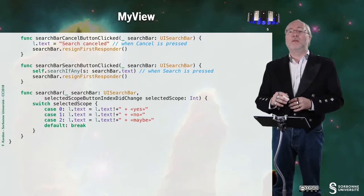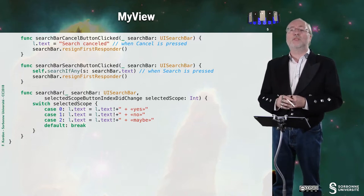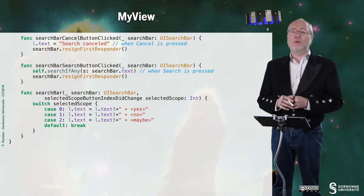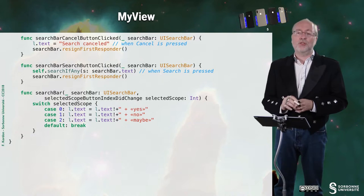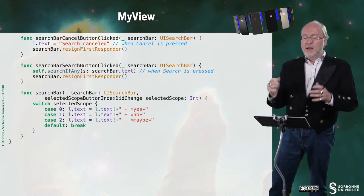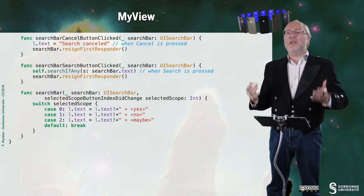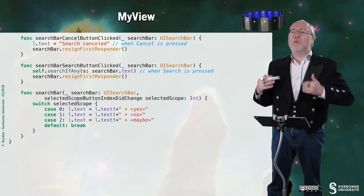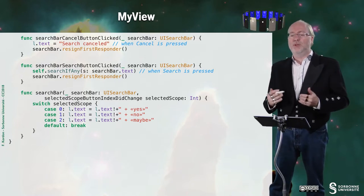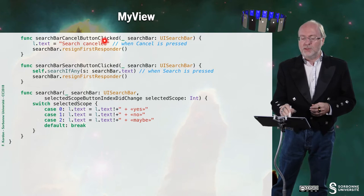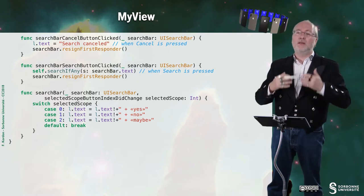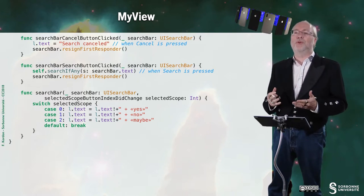Now, this method is invoked when the cancel button has been clicked. So, I just say, search cancel. And you notice that I'm in a situation where the keyboard is on. And I must resign the keyboard. So, the way to do it is to explicitly invoke resigned first responder. And then, the keyboard will disappear.